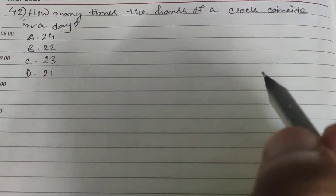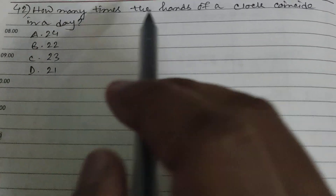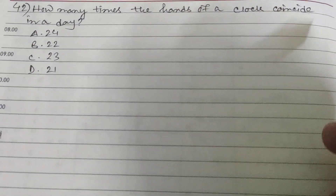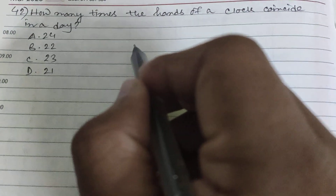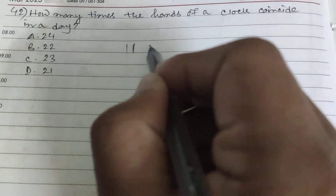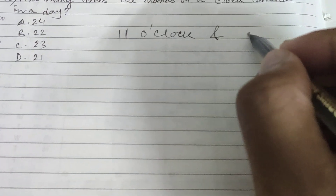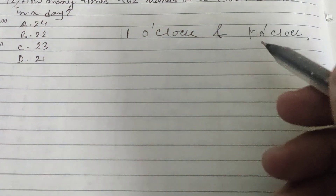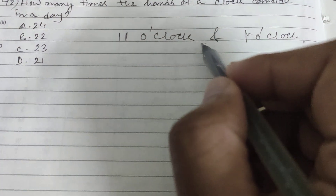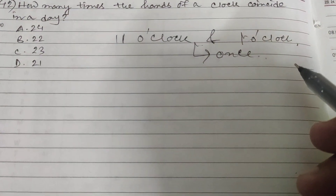Hi friends and students. This is question number 42: how many times do the hands of a clock coincide in a day? Between 11 o'clock and 1 o'clock, how many times do the hands of a clock coincide? This is once, right?